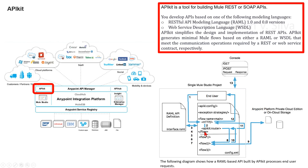In step seven, the router uses the information contained in the interface to determine which backend flow should receive the request. For example, based on the request and the resource-action pairing, the router determines that it should send the request to flow two. In step eight, the router sends the request to flow two. In step nine, flow two processes the request, accessing a resource and acting upon data as required. In step ten, flow two returns a response to the router.